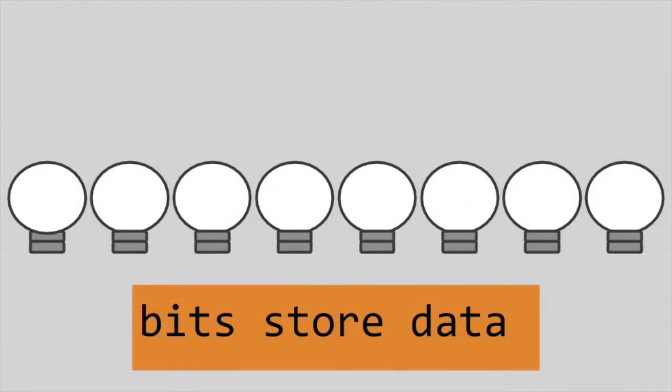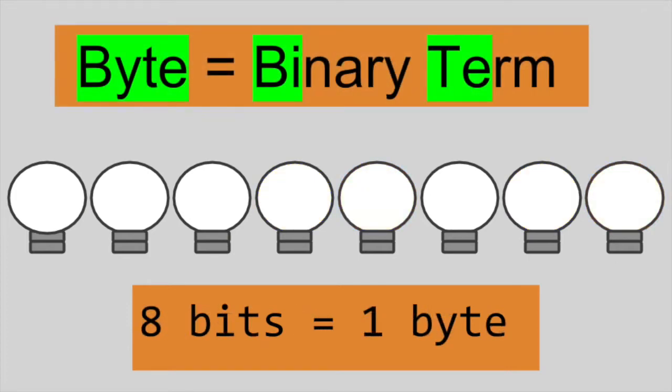From these simple bits, computers string together large sequences of ones and zeros to represent complex data and instructions. A string of 8 bits is referred to as a byte. Byte is short for binary term.